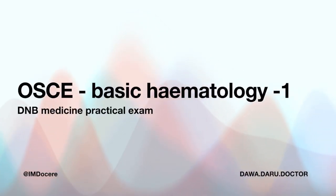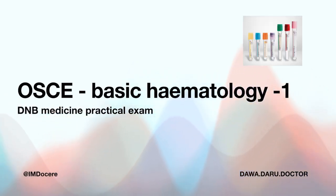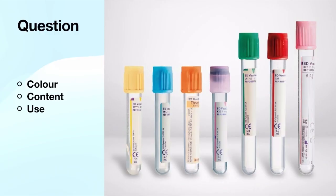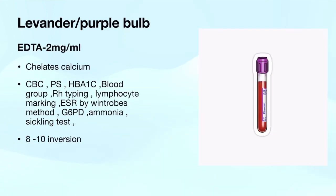Welcome to the new OSCE series. We are starting with hematology OSCE. In hematology, you either get a question on vacutainers or on slides. We are starting with our series on vacutainers — you have to identify the color, name the content, the number of times the tube is inverted, and the uses of each tube. One or two questions come from vacutainers in NEET SS also, so you should be thorough with it.